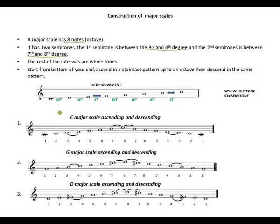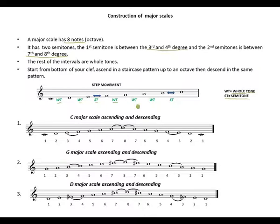Let's look at the step movement of a scale. Starting from the bottom, the first interval from C to the 2nd degree, D, is a whole tone. 2nd to 3rd degree, whole tone. Here we find our first semitone between the 3rd and 4th degree. ST represents semitone, WT whole tones. Then from the 4th degree to the 5th, whole tone. 5th to 6th, whole tone. 6th to 7th, whole tone. Then our second semitone between the 7th and 8th degrees.